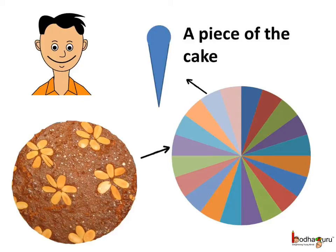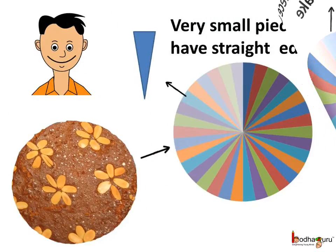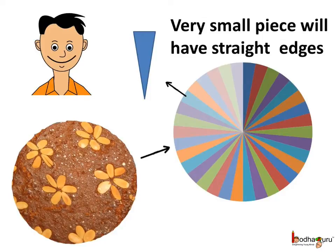Look here, all the pieces are equal and look similar too. Now, if the cake was further cut into many small equal pieces, then the edges of each piece would almost look like a straight line instead of a curve.